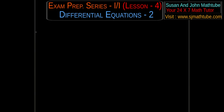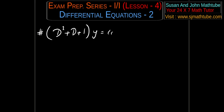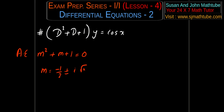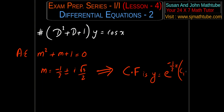Let's try one more question so that your concept becomes really solid. Solve: (D squared plus D plus 1) of y equals cos x. The auxiliary equation is m squared plus m plus 1 equals 0. Using a calculator, m equals minus 1/2 plus or minus i root 3 over 2. This is the third possibility in type zero, so the complementary function is y equals e to the power (minus 1/2)x times (c1 cos(root 3 over 2)x plus c2 sin(root 3 over 2)x).